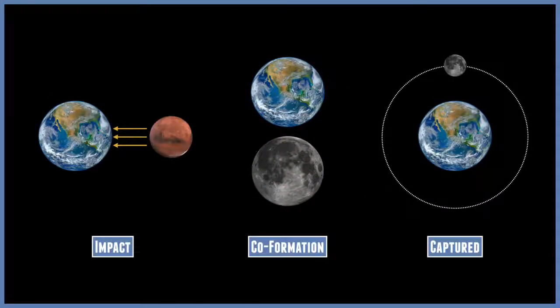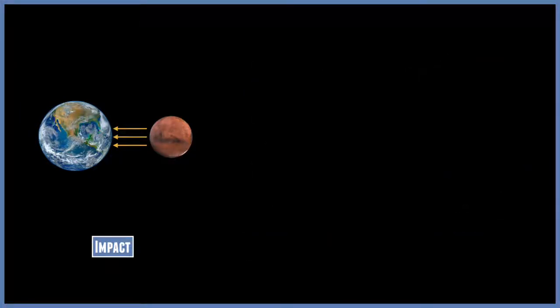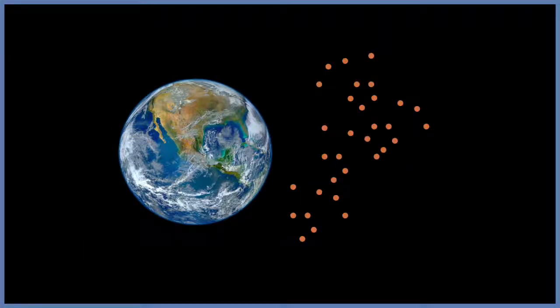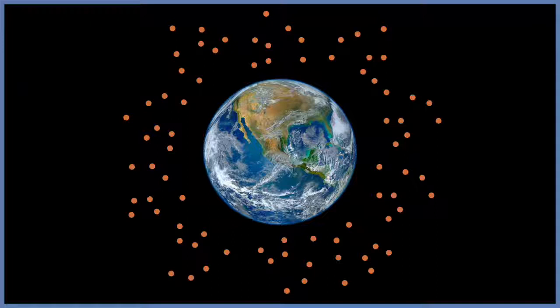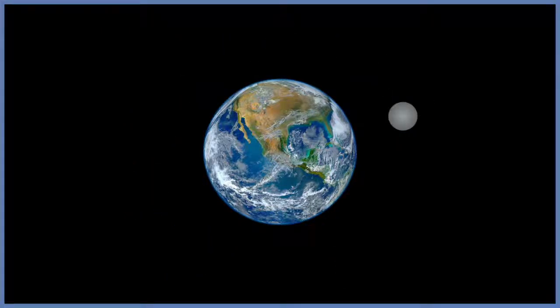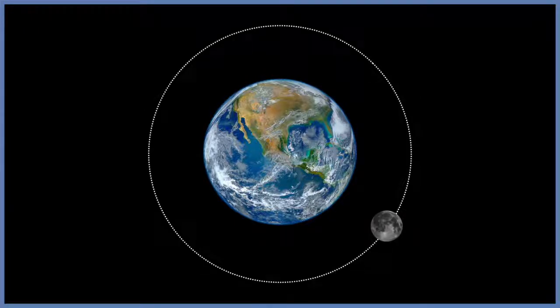The co-formation theory and the capture theory both explain some elements of the existence of the moon, but they have so many unanswered questions. So the leading theory is the giant impact theory. This seems to cover as much as possible, and answers most of the questions. This makes it the leading theory in the formation of the moon, and is the best scientific evidence to show that our moon was probably once another planet that collided with earth, and coalesced into what we know now as our closest neighbor, the moon.